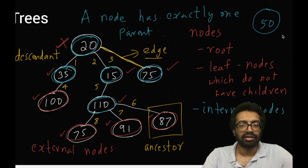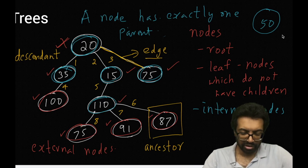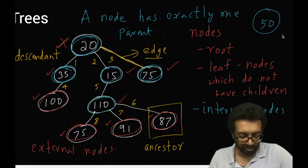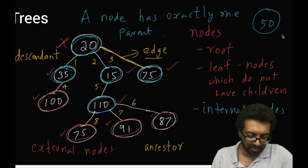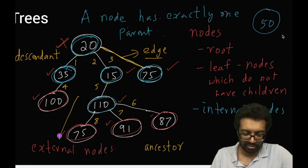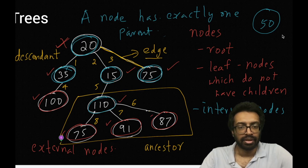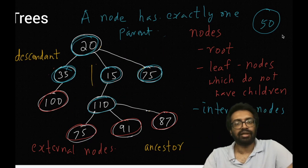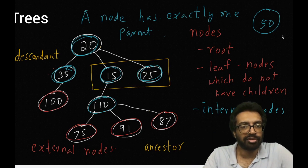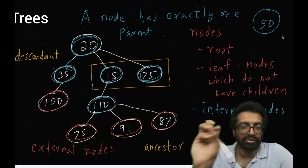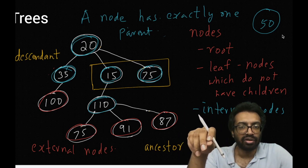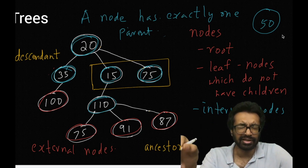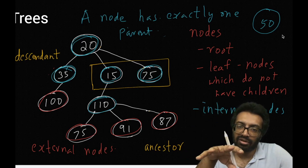We are looking at one last property called as a sub-tree. A sub-tree is a part of a tree which is itself a tree. For example, this entire thing is a sub-tree — it is a part of this tree and it is also a tree. Is this a sub-tree — do nodes 15 and 75 form a tree? No, that is not a sub-tree because 15 and 75 alone do not form a tree. A tree should have a root and all nodes should be connected. From the root you should be able to reach every node. If you have only 15 and 75, they do not have a root, so that is not a sub-tree.